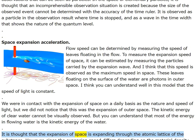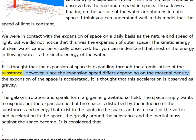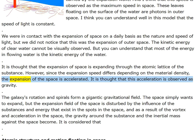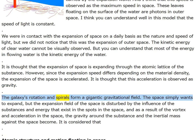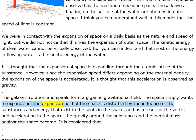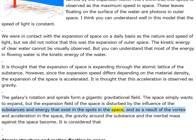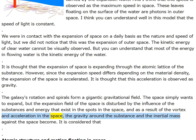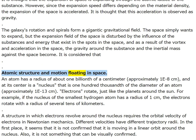The kinetic energy of clear water cannot be visually observed, but most of the energy in flowing water is the kinetic energy of the water. It is thought that the expansion of space passes through the atomic lattice of substances. Since the expansion speed differs depending on material density, the expansion of space is accelerated — this acceleration is observed as gravity. The galaxy's rotation and spirals form a gigantic gravitational field; the space simply wants to expand but the expansion field is disturbed by substances and energy in spots, resulting in vortex and acceleration creating gravity and inertial mass.